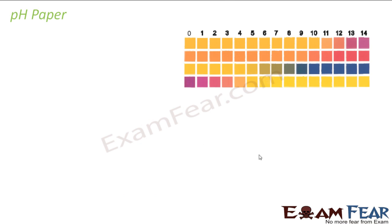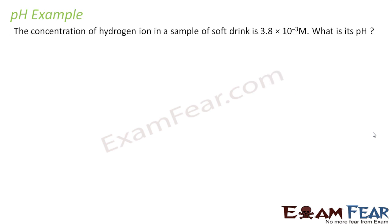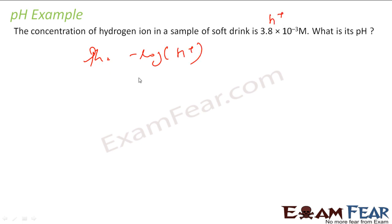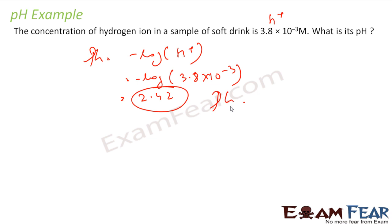There is something called pH paper, which is used to find the pH - you may have used this in lab also. Let's take an example: the concentration of hydrogen ion in a sample of soft drink is 3.8 into 10 to the power minus 3. What is the pH? pH is nothing but minus log of H plus ion concentration. It becomes minus log of 3.8 into 10 to the power minus 3, which equals 2.4. So this is the pH. Very easy - just put the value and get the answer.